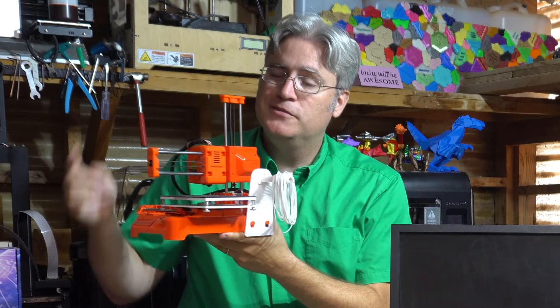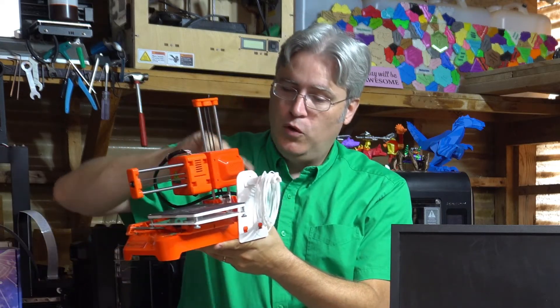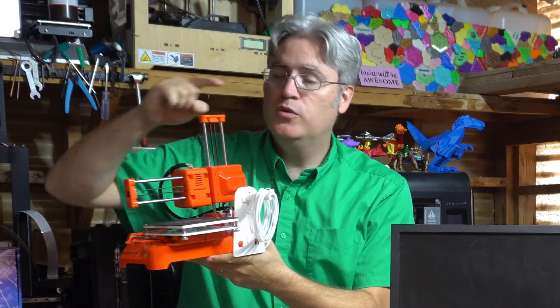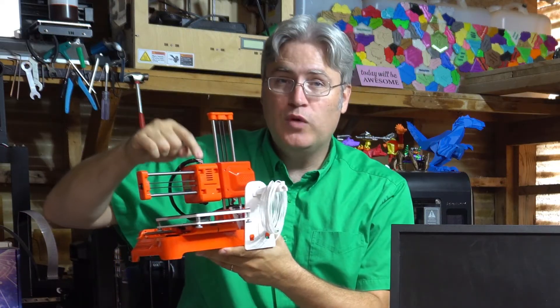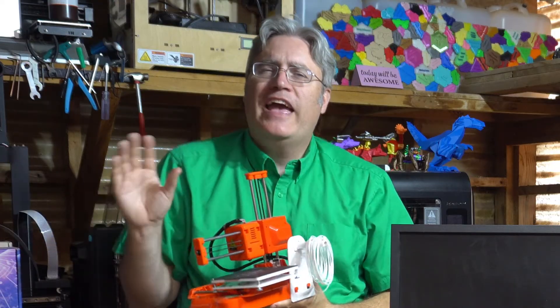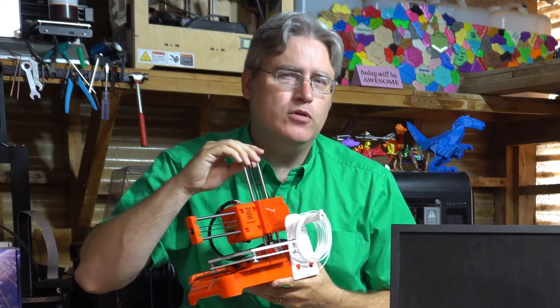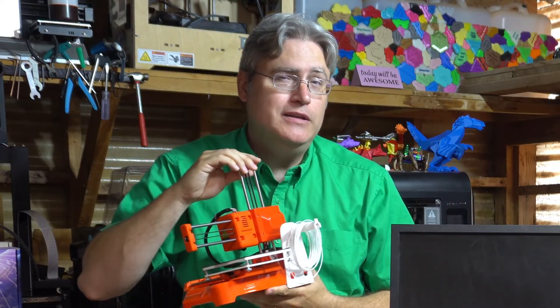Now, you might have noticed, but this is a direct drive. There's no motor externally that's pushing it through a long Bowden tube. It goes right in and gets pulled in right here. And, direct drives, sometimes, oftentimes, have an advantage over Bowden printers that they print flexible filaments real easy. Wouldn't it be amazing if this 3D printer could do flexibles?